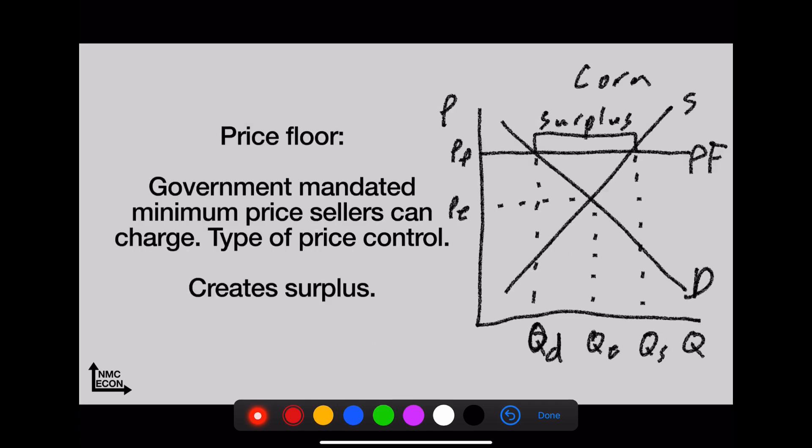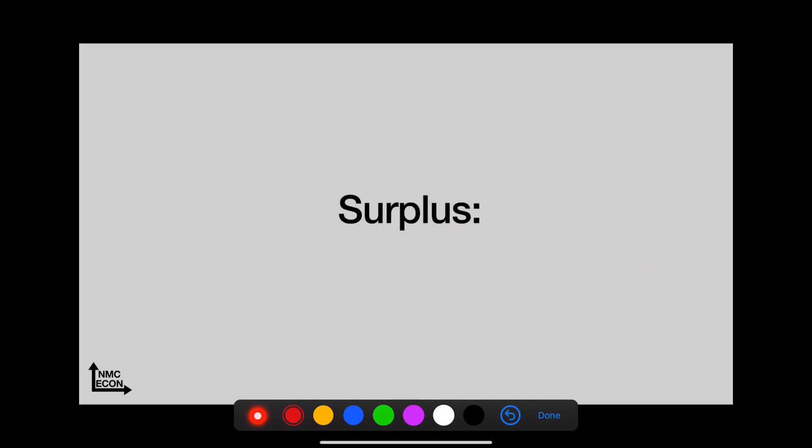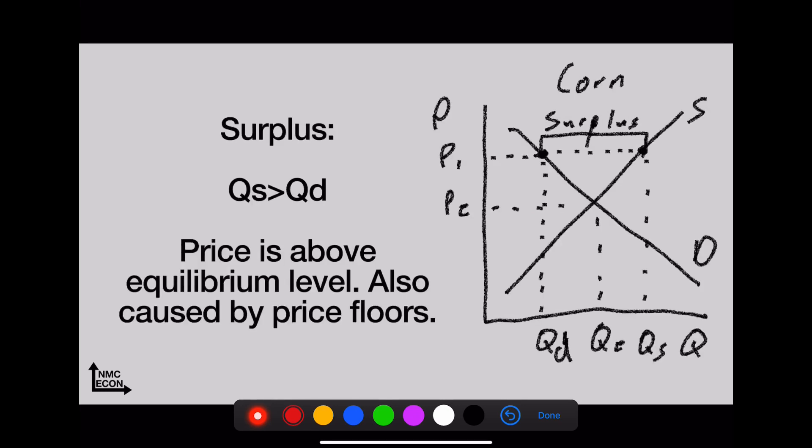Price floor—this is the opposite. This is a government mandated minimum price that sellers can charge. It's a type of price control and this is trying to protect producers. These create surpluses. Again, the market wants to work at Pe. Can it? No. The lowest price they can charge is P sub f. This creates a surplus where quantity supplied is way bigger than quantity demanded. That distance there is your surplus. What's the store look like? Lots of goods, full shelves, no customers. Price is too high. A surplus—again, quantity supplied bigger than quantity demanded.